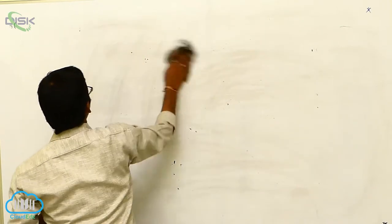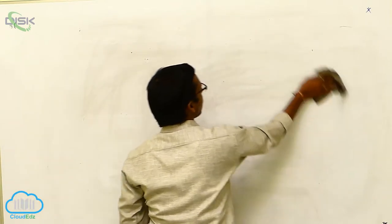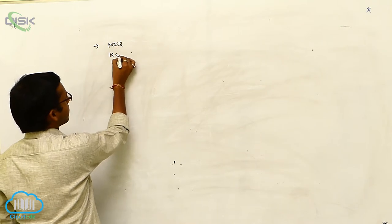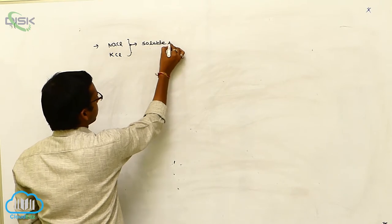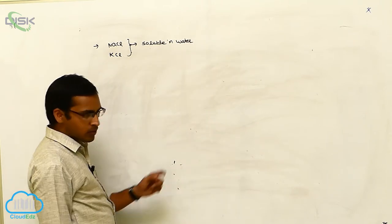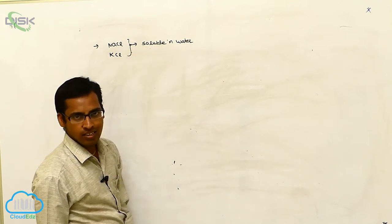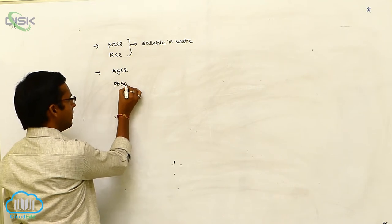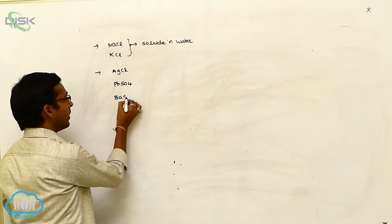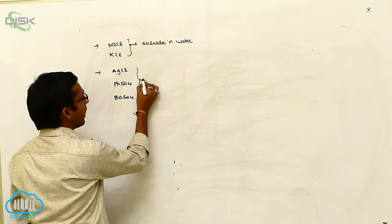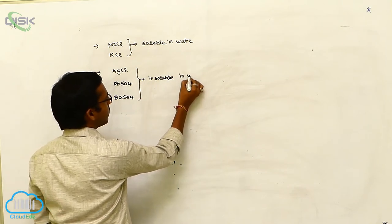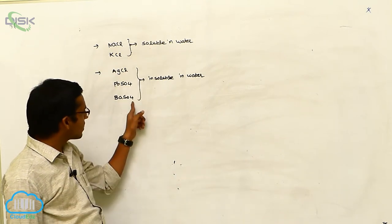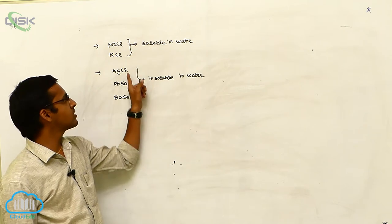Another application of Kohlrausch's law is the calculation of sparingly soluble salts. Some salts, for example NaCl or KCl, are easily soluble in water and are not called sparingly soluble salts. For example, silver chloride AgCl, lead sulphate PbSO4, or barium sulphate BaSO4 — these three salts are insoluble in water. By increasing conductance, these salts dissolve slightly in water, and those salts are called sparingly soluble salts.